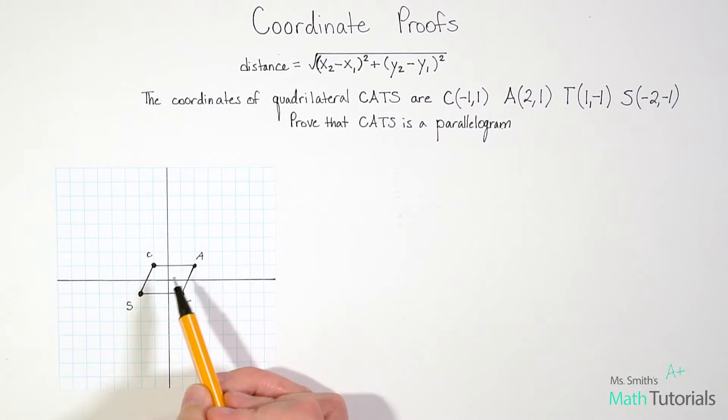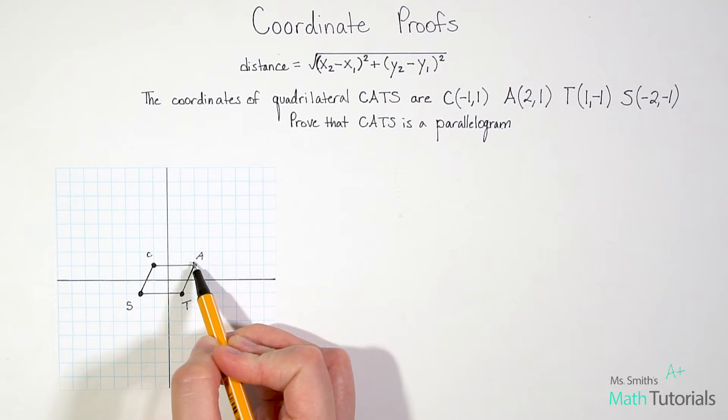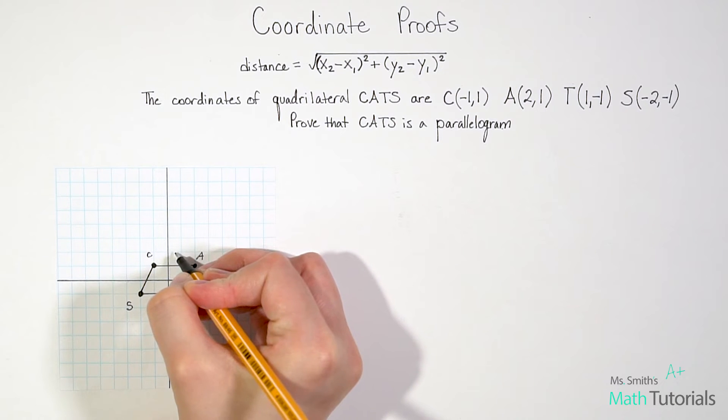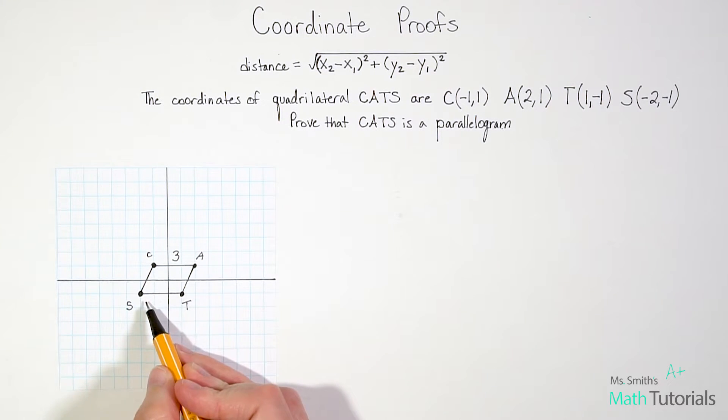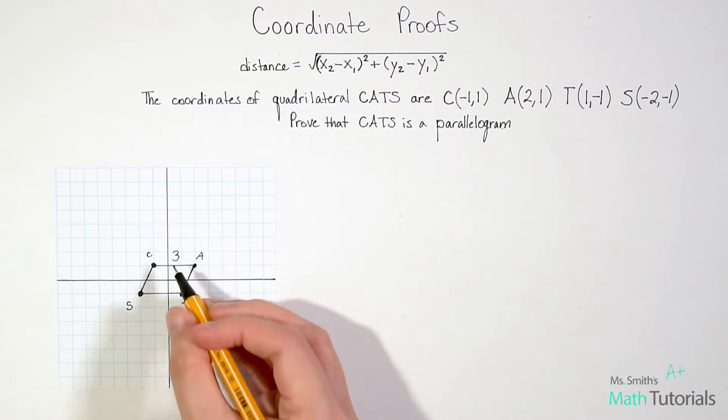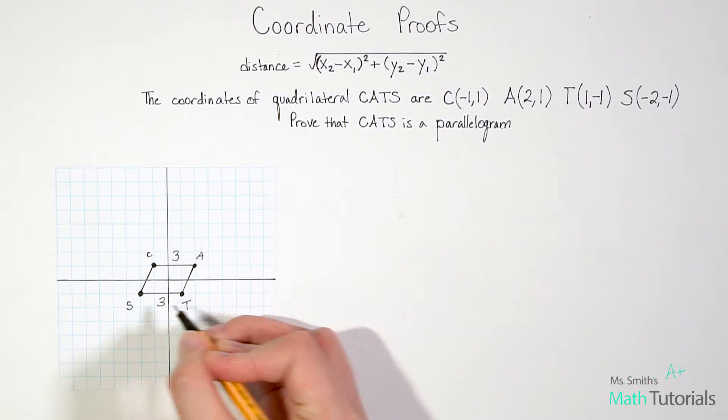Looking at that, notice how these two sides, CA and TS, they fall directly on a straight line of my coordinate plane. So I can actually just count the boxes here. We don't need to use the distance formula—you could, you'd get the same answer, but it'd be a waste of time. So I can count that from C to A is one, two, three units. I'm just going to note that on here. And then from T to S is one, two, three units.